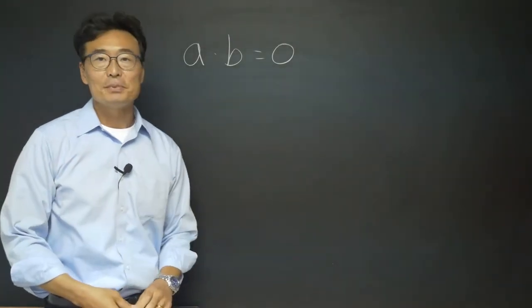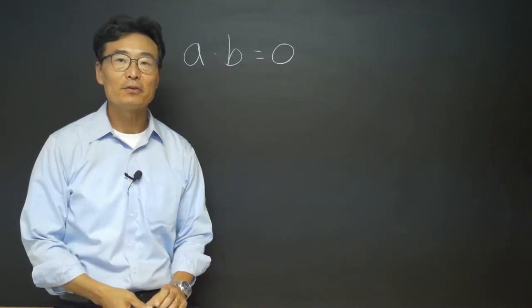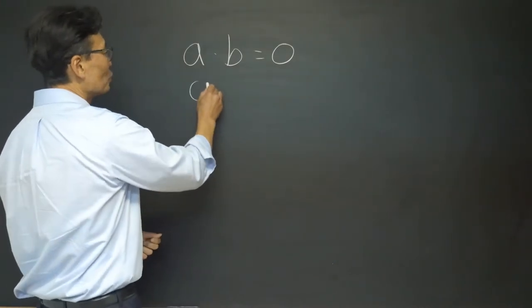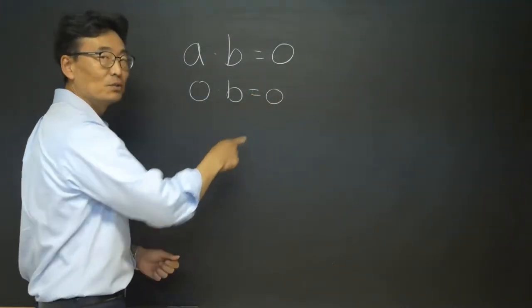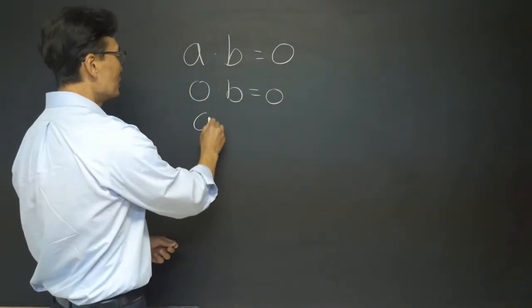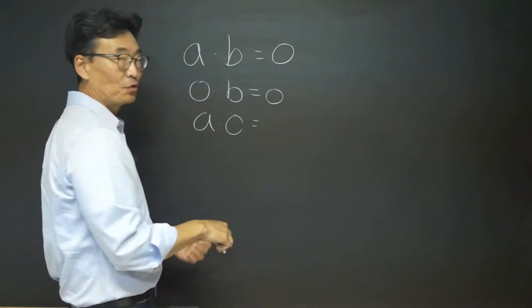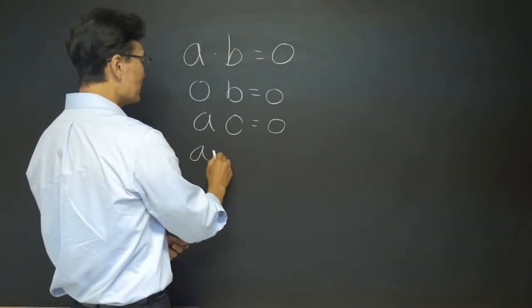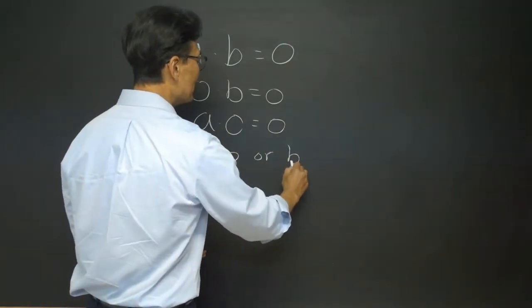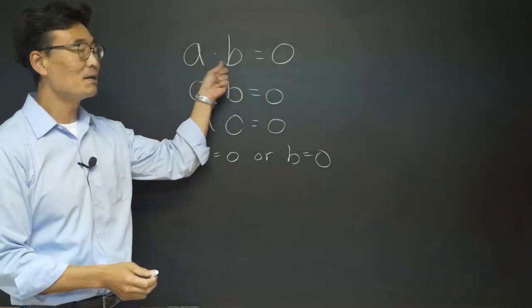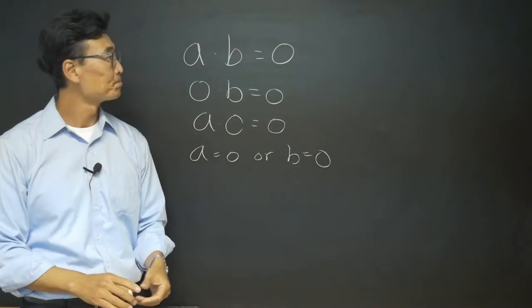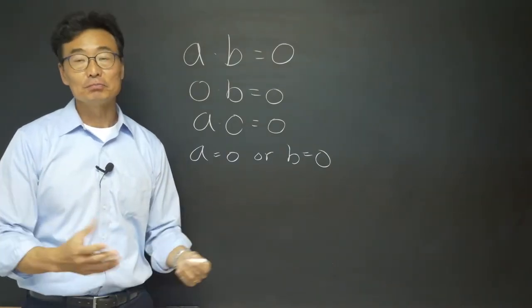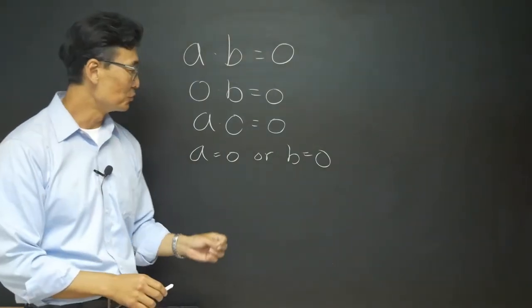Given A times B is equal to zero, we know that either A or B is equal to zero. If A is equal to zero, then zero times B gives us zero. Likewise, if B is equal to zero, meaning A times zero, that gives us zero as well. So we know that either A is equal to zero or B is equal to zero. If we have two things multiplied to each other and set equal to zero, then one or the other — A or B — will be equal to zero. It could also be both.